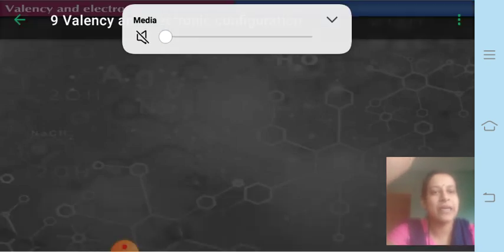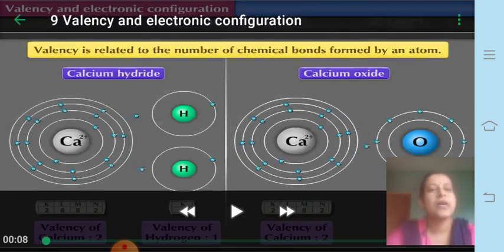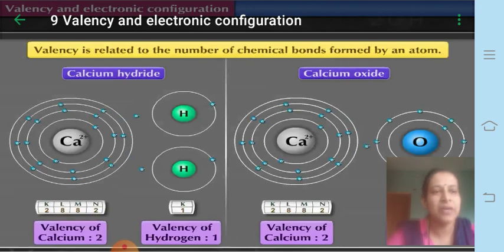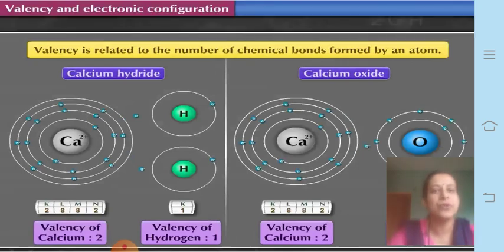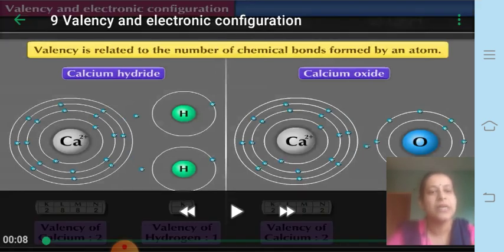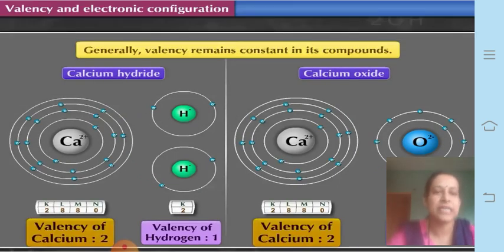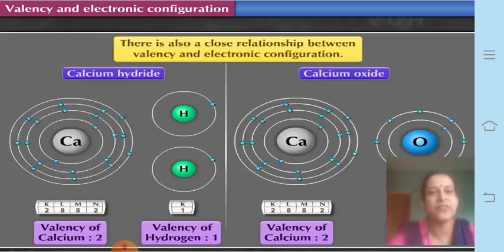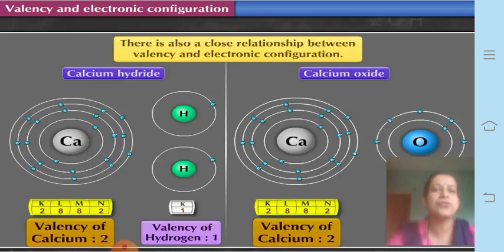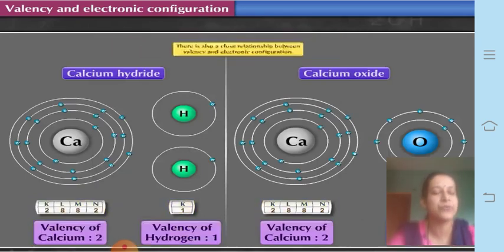Valency is nothing but the combining capacity of an element. Combining capacity means when chemical bonds are formed or when a chemical reaction takes place. The number of bonds which are formed is related to the valency. So valency is related to the number of chemical bonds formed by an atom. Valency generally remains constant in a compound, and there is also a close relationship between valency and electronic configuration.